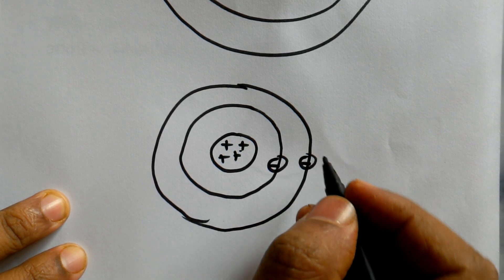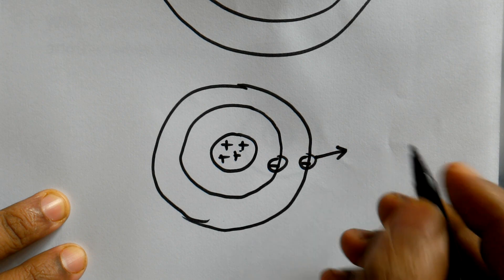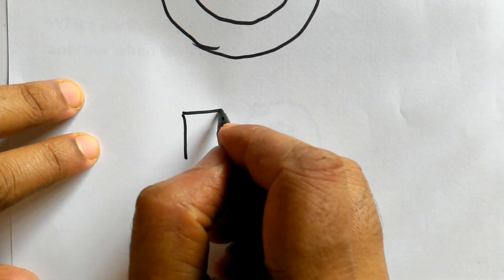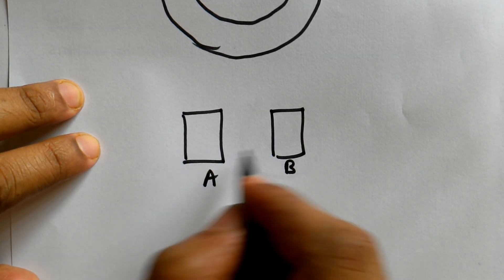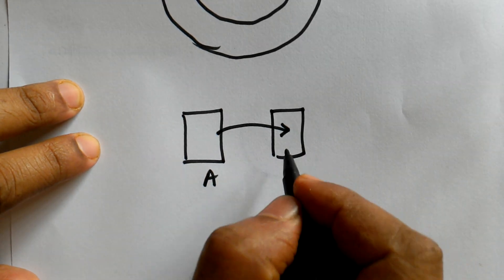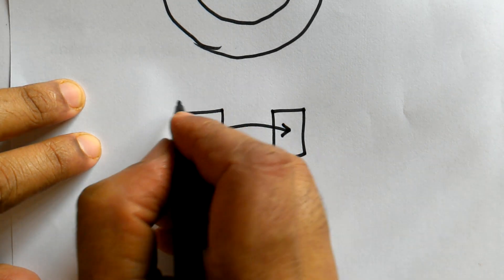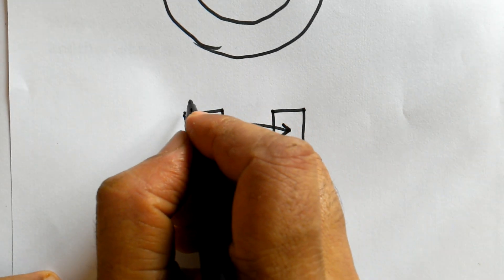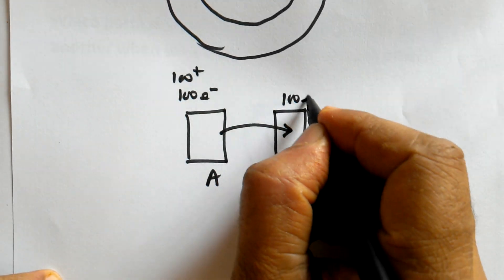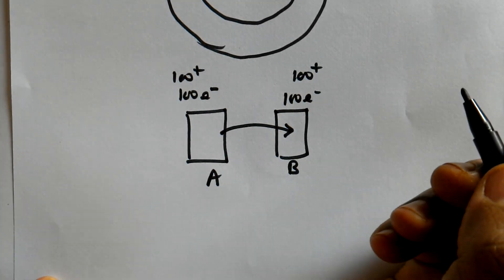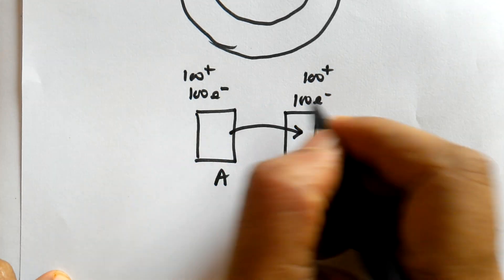Suppose you remove electrons from object A by rubbing it against object B, so electrons are transferred from A to B. Suppose before rubbing, both were electrically neutral — each having 100 protons and 100 electrons, for convenience. Remember, a real material has far more than 100 electrons and protons; this number is taken just for convenience.